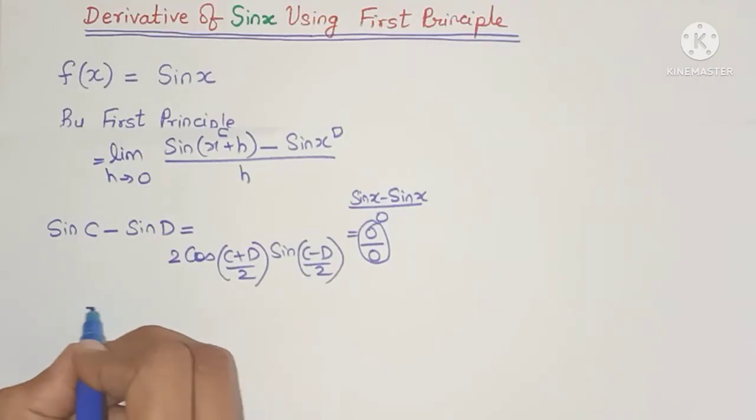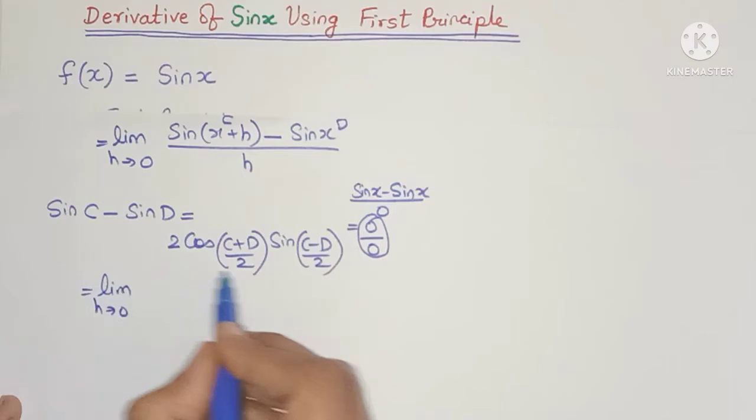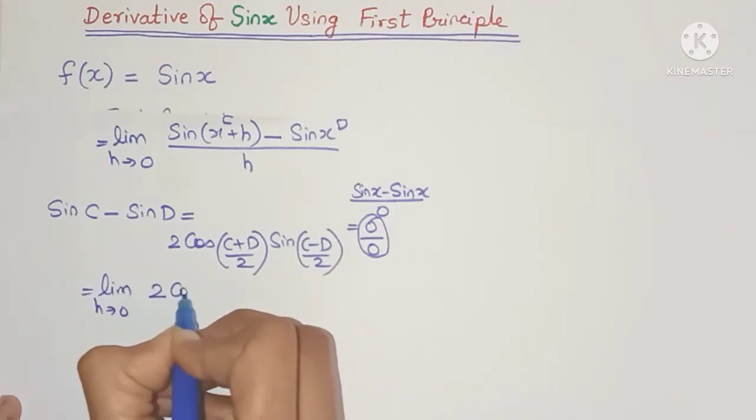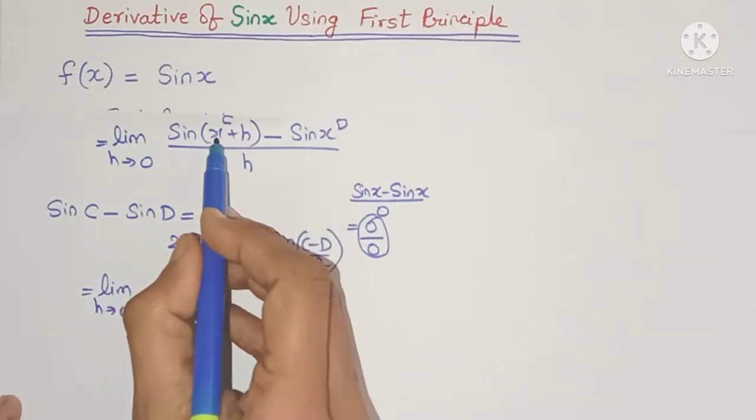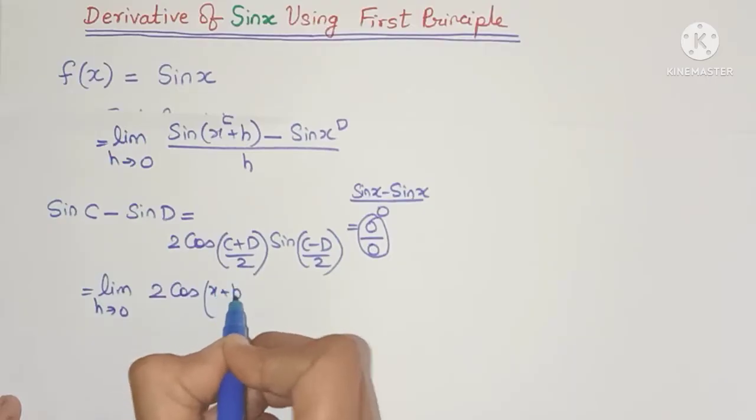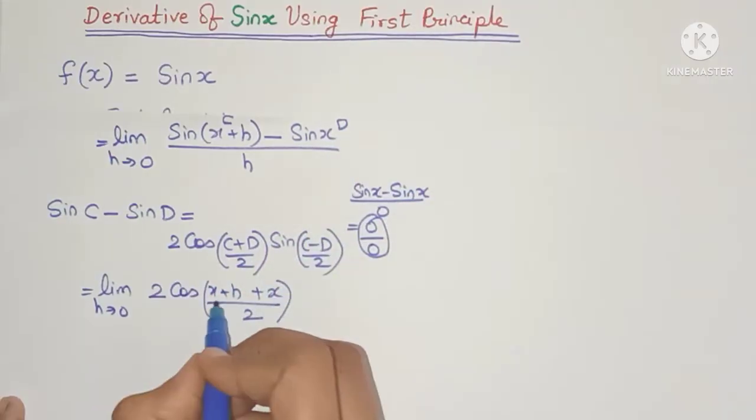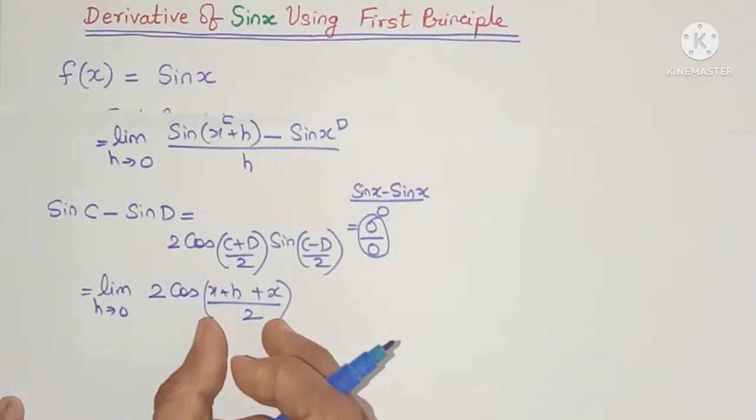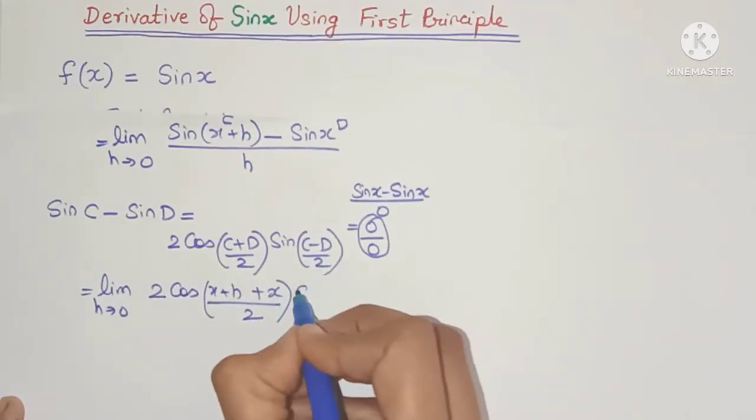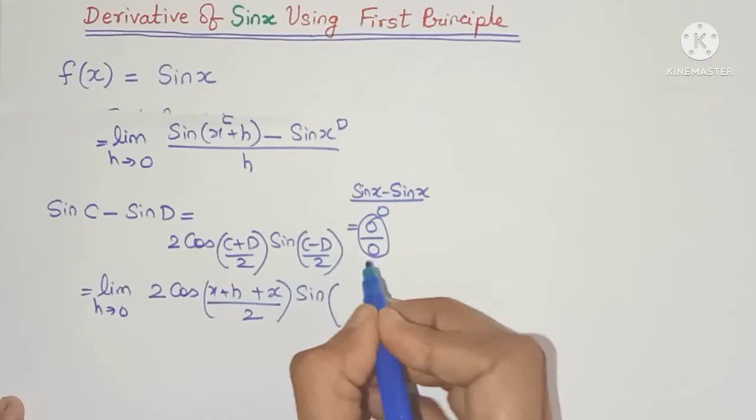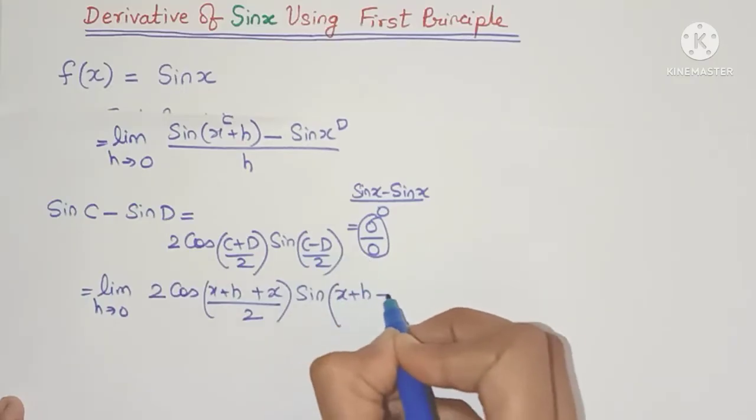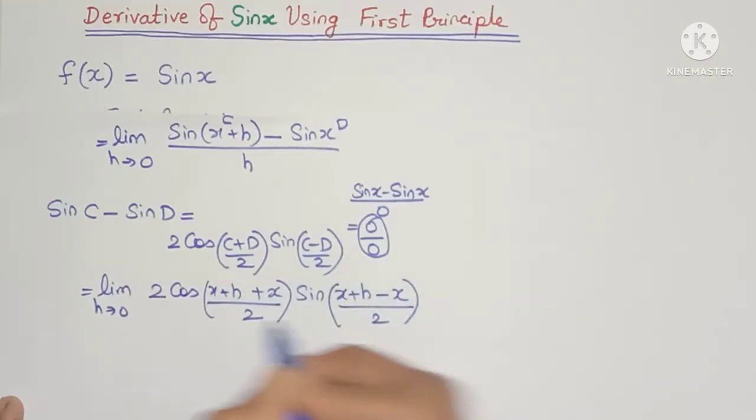So we'll get limit h tends to 0 as it is. Now instead of this I'm going to write 2 cos, so c is x plus h plus d is x, the whole divided by 2. This divide by 2 is only for this angle. And sin c minus d, so x plus h minus x divided by 2. Let's not forget the divide by h.